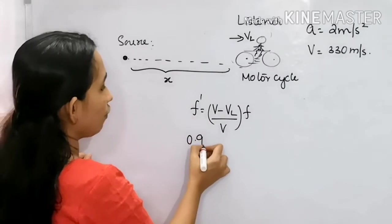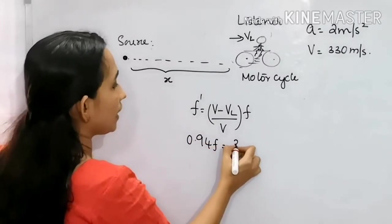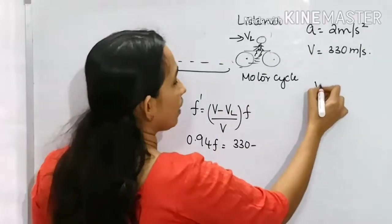This is 94%. Therefore, 0.94F is equal to V, 330, which is speed of sound, minus VL. That is what we calculate here.